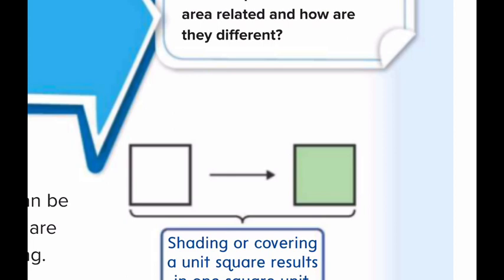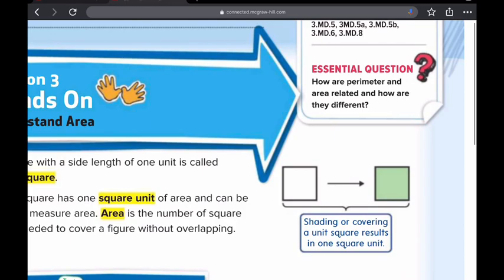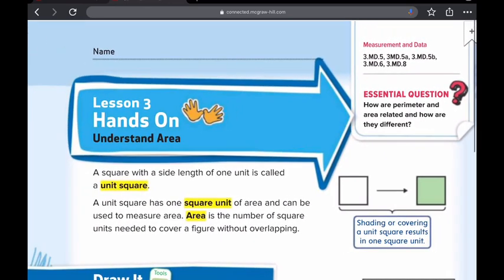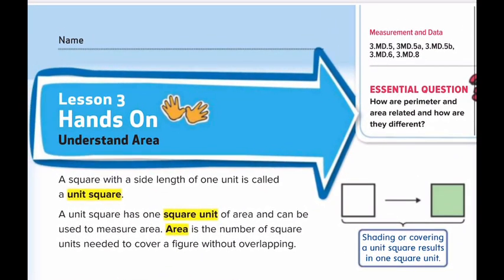Here it shows this is the square before shading or covering, and this is after shading or covering. An area is the number of square units needed to cover a figure without overlapping.